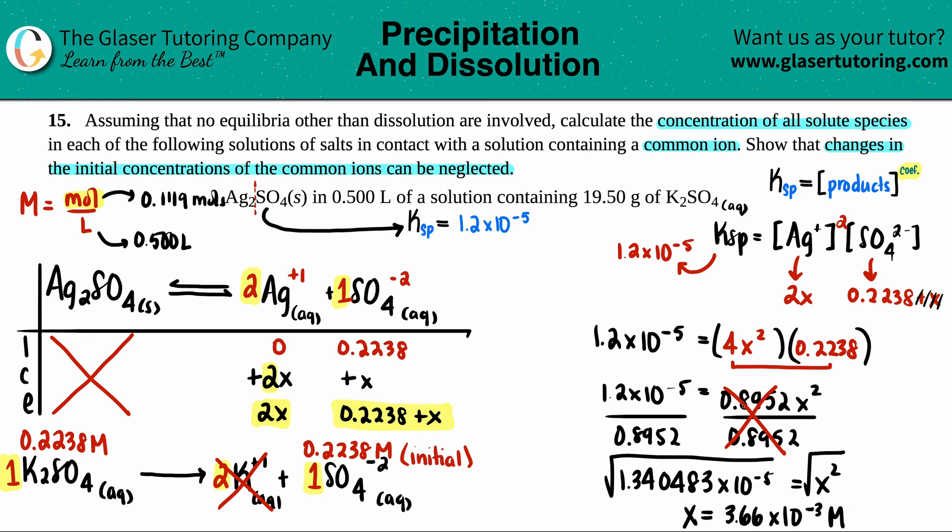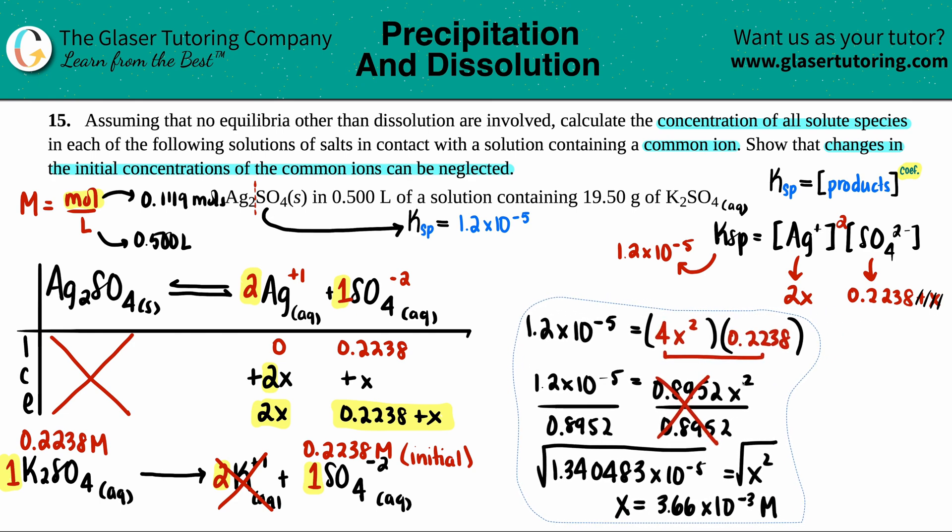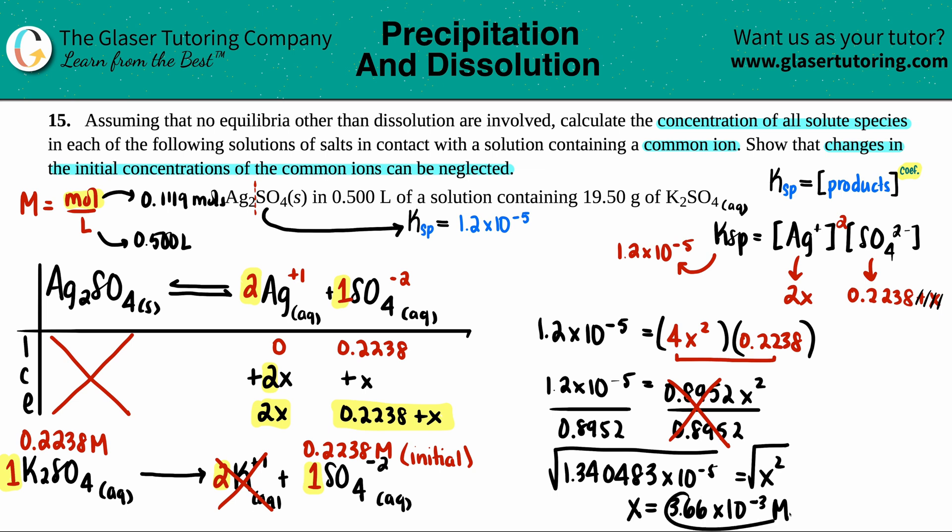Now let's just make sure that this obeys the 5% rule. What we're going to do is we're going to take the answer that we got. So 3.66 times 10 to the negative third and divide it by the initial 0.2238 and multiply that by 100. If this is 5 or less, we were allowed to assume. So 3.66 times 10 to the negative third divided by 0.2238 times 100. And yeah, I get like 1.6%. So this obeys the 5% rule. So maybe I'll say 5% rule with a check. What kind of check was that? There we go.